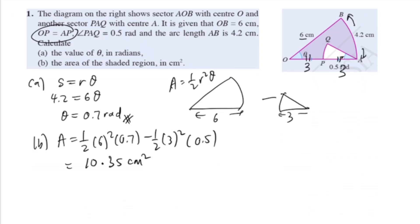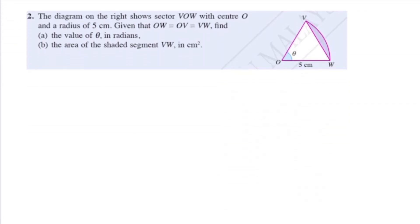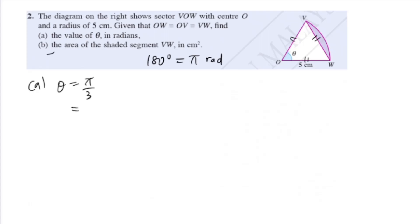Moving on to question 2. The diagram shows sector VOW with center O and radius 5 cm. OW equals OV equals VW, so this is an equilateral triangle. For an equilateral triangle, the interior angles are equal, so we take 180 divided by 3 to get 60 degrees, or in radians pi divided by 3. Using pi as 3.142, you should get 1.047 radians.